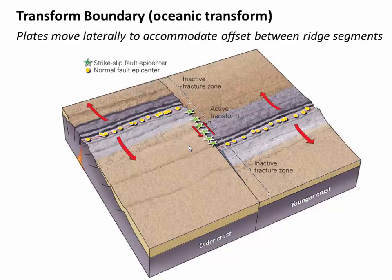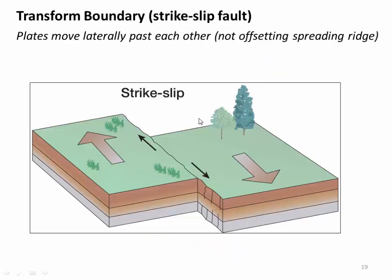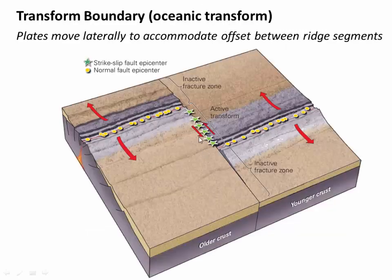Our final category of plate boundary is a transform boundary, and again we have two types. One is called an oceanic transform — a type of lateral fault where the crust is moving laterally past another block of crust. We find these linking spreading ridges. You can see these spreading ridges have become offset — this one's moving this way, this side is moving this way — and so we get what's called a transform boundary between those two offset segments of mid-ocean ridge. We essentially have a strike-slip fault here. If we have a similar lateral motion on land, we would always refer to it as a strike-slip fault, which is a blanket name for plates moving laterally past each other in any situation where they're not offsetting a spreading ridge.